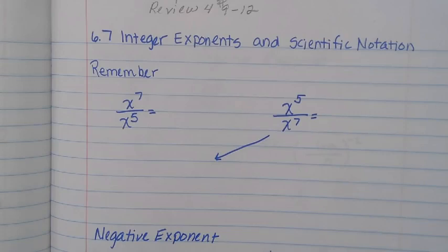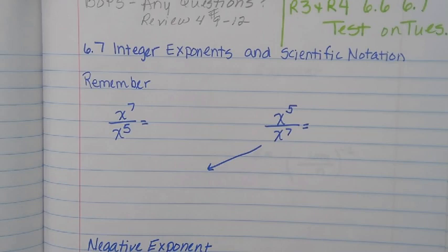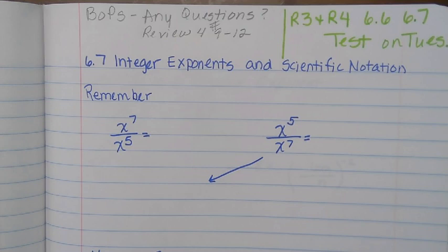Okay, so section 6.7: integers and exponents, and we're going to touch a little bit on scientific notation. Can you do these two problems for me real quick? Tell me what you get for the first one, tell me what you get for the second one.